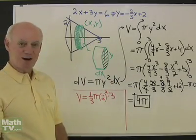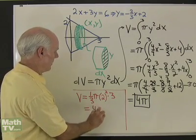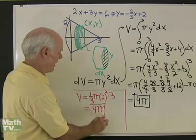So did that work out right? Looks like it did. 1 third and 3 divide out. 2 squared is 4. I end up with 4 pi for that volume.